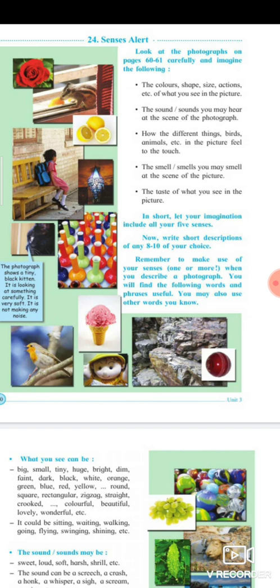For example, a photograph shows a tiny black kitten just looking at something carefully. It is very soft and not making any noise — she is very silent. She is black in color. You can describe the color, and her action is only gazing. As for sound, she is not producing any sound.